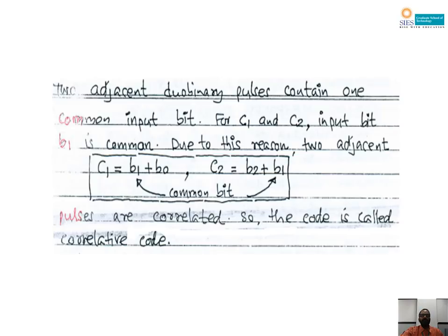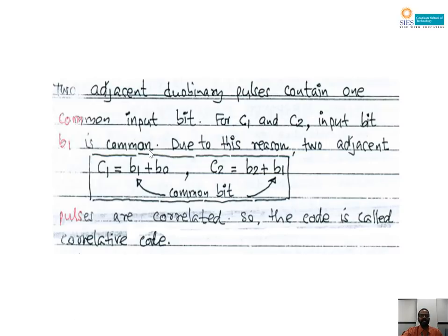Two adjacent duo binary pulses contain one common input bit. For example, C1 is generated from B1 and B0, and C2 is generated from B2 and B1. So B1 is common between C1 and C2. Similarly, B2 is common between C2 and C3. This continues, indicating adjacent pulses are always correlated. That is why the code is known as correlative code — because adjacent pulses are always correlated.